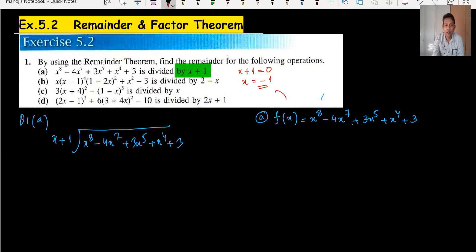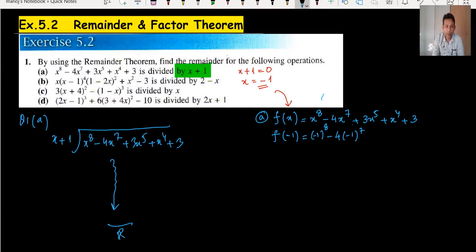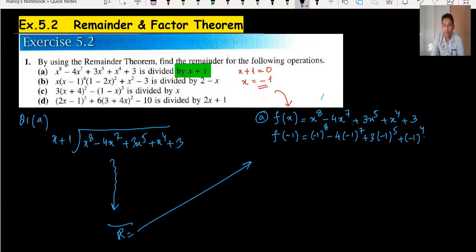We substitute x = minus 1 into f(x). So we compute f(minus 1): minus 1 to the power 8, minus 4 times minus 1 to the power 7, plus 3 times minus 1 to the power 5, plus minus 1 to the power 4, plus 3.